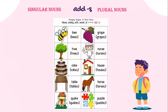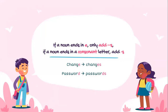Here we have nouns ending with an e: bee, bees; tree, trees; cake, cakes; table, tables; quake, quakes; grape, grapes; nurse, nurses; house, houses; horse, horses; puzzle, puzzles. So if a noun ends with an e, we only add s. Similarly, if it ends in a consonant letter, we only add s — like change, changes; password, passwords.